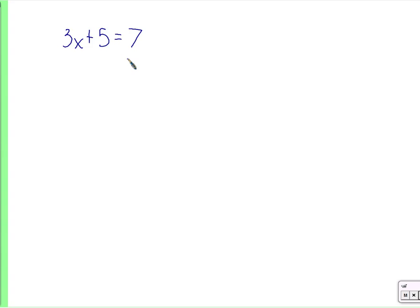This is what we call a two-step equation. 3x plus 5 equals 7. First, we subtract 5. We have 3x equals 2. Divide by 3. x equals 2 thirds. Have a good day.